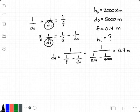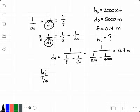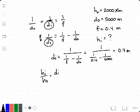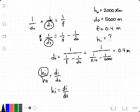Now that we know the distance of the image, we can use the magnification equation to solve for the height of the image by multiplying by HO on both sides.